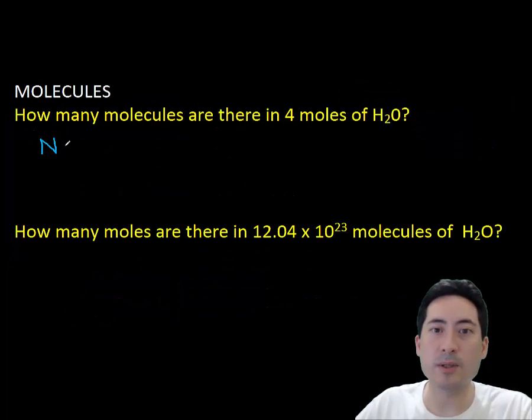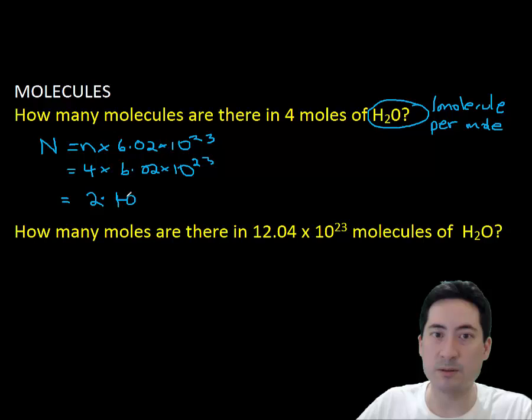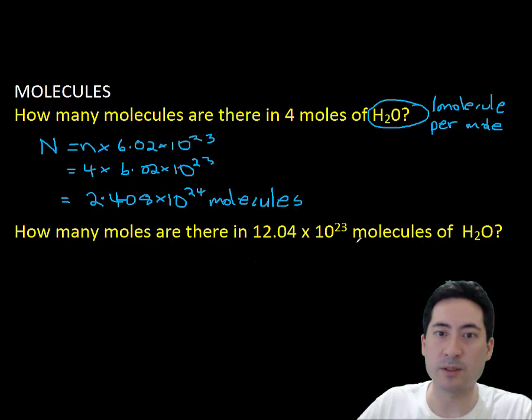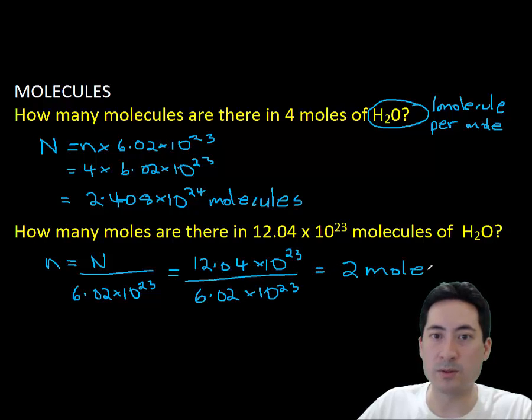Moving on to molecules now. How many molecules are there in 4 moles of H2O? That one's a little simpler because one molecule of H2O is one molecule. So we can just times it out by the 6.02. Now there's 4 moles, so we get a total of 2.4 by 10 to the 24 molecules. Working around the other way now, how many moles are there in 12.04 by 10 to the 23? Again, divide it by the value of the mole, and that'll give you a total of 2 moles in that many number of particles.